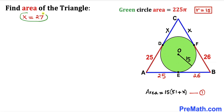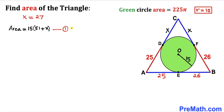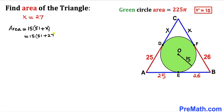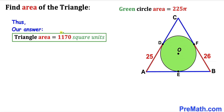With x = 27, substituting into Equation 1: Area of triangle ABC = 15 × (51 + 27) = 15 × 78 = 1170 square units. So the area of triangle ABC is 1170 square units.